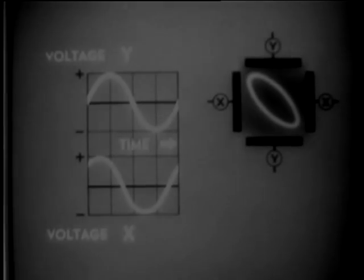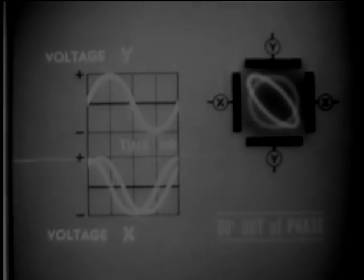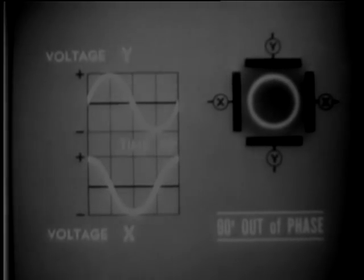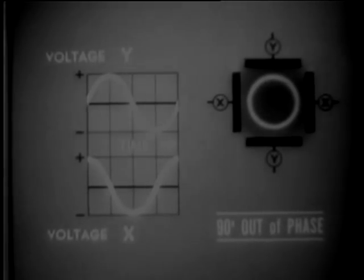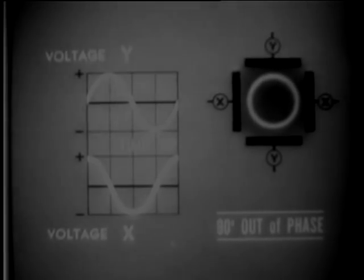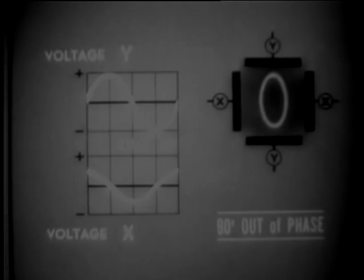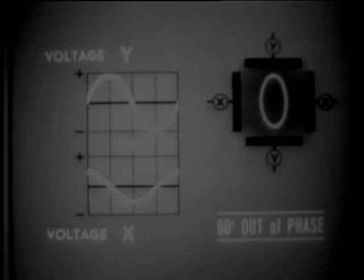But phasing isn't the only thing that will affect the shape of our circle. You can have the voltages 90 degrees out of phase and still not get a circle if the amplitudes are allowed to vary. If, for example, the amplitude of voltage X becomes less than voltage Y, it will change the circle into an ellipse pushed in on both sides, because the horizontal deflection is not as great as the vertical deflection.